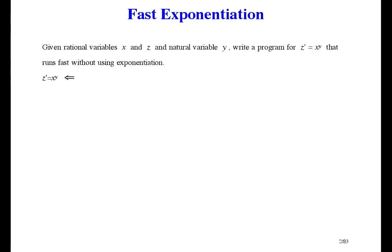We already have the specification, and since we don't have exponentiation, about the only possibility is to accumulate a product — X times X times X as many times as necessary. And if you're going to accumulate a product you start the accumulator at 1. Then the remaining problem is: the final product Z prime equals the product so far Z times the remaining factors X to the power Y.